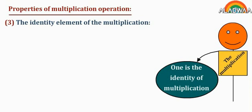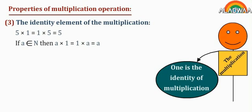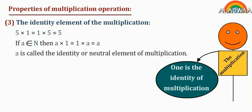Property 3: the multiplicative identity element. For example, 5 times 1 equals 1 times 5 equals 5. If a belongs to N, then a times 1 equals 1 times a equals a. The number 1 is called the identity or neutral element of multiplication.